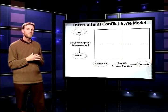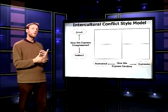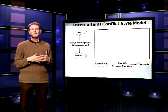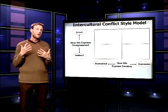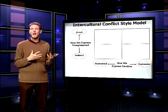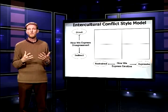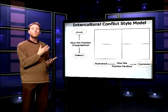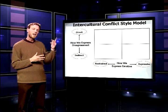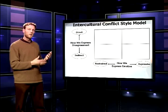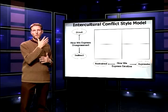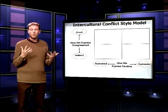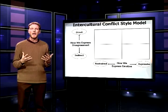You can see there are four quadrants here with a vertical and horizontal axis. Conflict comes not only from our differences — perceived or actual — but also from our emotions. How we express disagreement runs along this vertical axis. Are you a very direct person when disagreement happens? Do you speak directly to the problem?